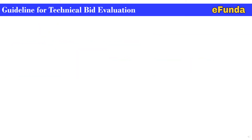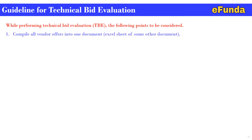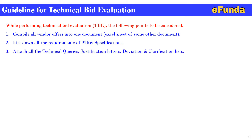Guidelines for Technical Bid Evaluation. While performing technical bid evaluation, the following points are to be considered. First, compile all vendor offers into one document, that is an Excel sheet or other document. Two, list down all the requirements of the MR specification. Third, attach all the technical queries, justification letters, deviations, and clarification lists.